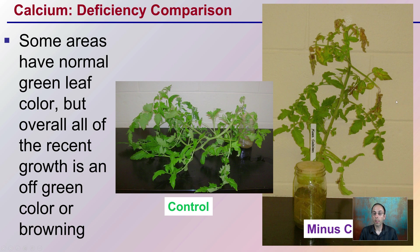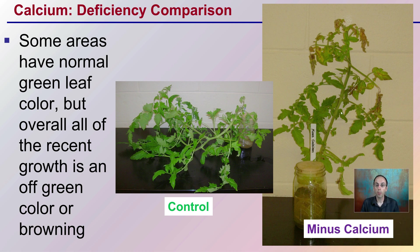For comparison, here's that same plant with the minus-calcium treatment next to the control — what a plant should look like. The control is upright, though it grew so aggressively it kind of fell over. We're seeing the consistent green color in the control. Some areas in the test plant do have normal green leaf color, but the most recent, newer growth tends to get that browning that occurs.